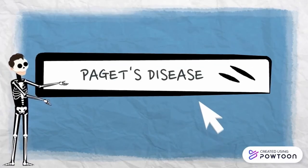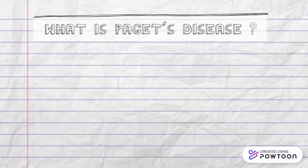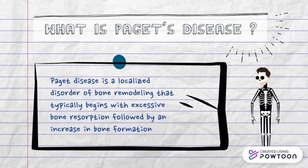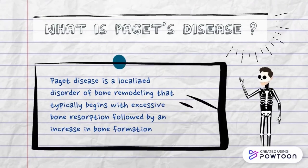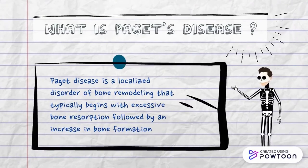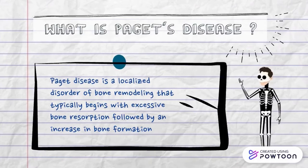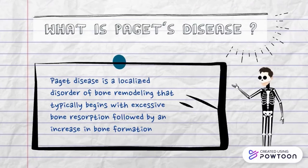Paget's disease is a localized disorder of bone remodeling that typically begins with excessive bone resorption, followed by an increase in bone formation.